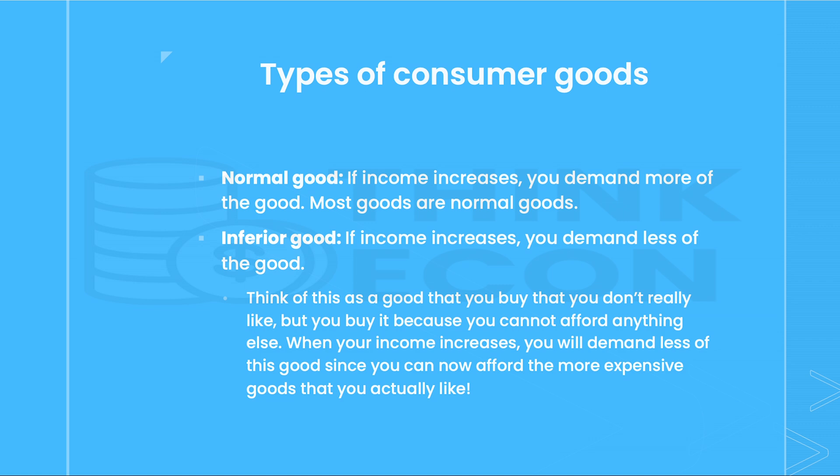In the case of an inferior good, if income increases, you demand less of the good. Why would that work — isn't that the opposite of the law of demand? Think of an inferior good as a good that you buy that you don't really like, but you buy it because you cannot afford anything else. When your income increases, you will demand less of this good since you can now afford more expensive goods and the goods that you actually enjoy.